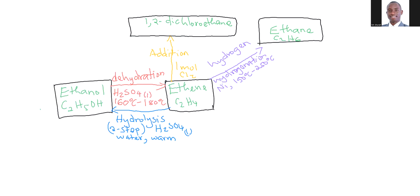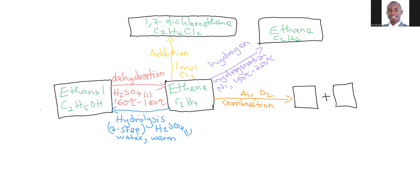Ethene can also undergo combustion — that is when we are burning it in air. Combustion needs a little bit of air or oxygen, and the two products formed are carbon dioxide and water. So our flowchart is taking shape now, and this is beginning to be fun.